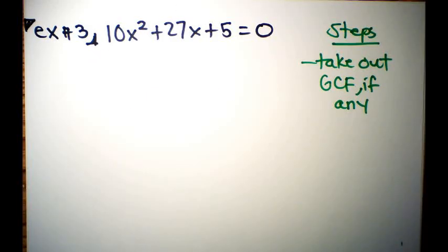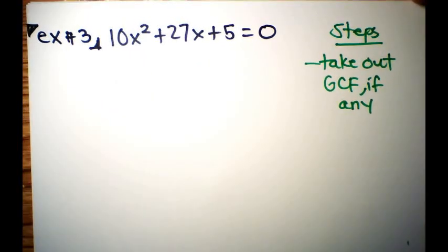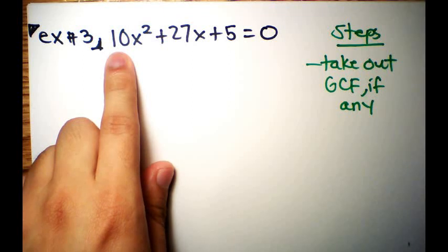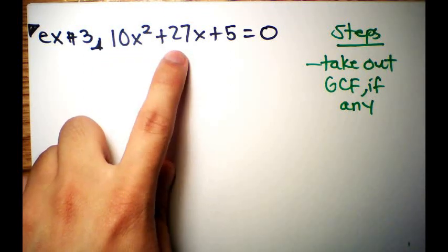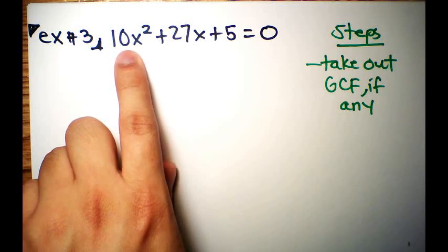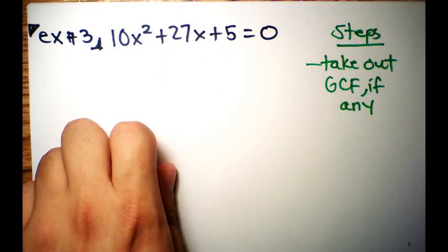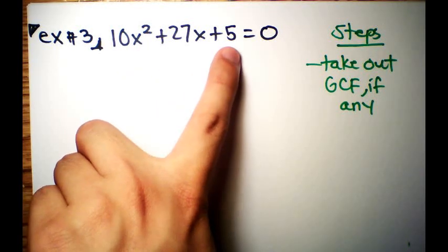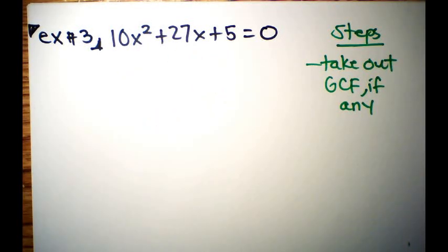Example three: 10x² + 27x + 5 = 0. Before factoring, always check for a GCF. Looking at 10, 27, and 5 — they share no common factor other than 1. Checking variables: the terms have 2x, 1x, and no x, so we can't pull out a GCF.